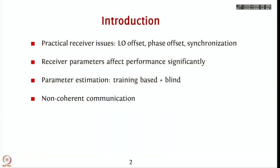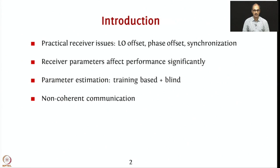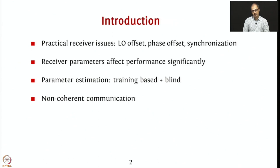There are several practical receiver issues, such as local oscillator offset — that is, you may not have the carrier available at the receiver with the same frequency; there is always some offset. There could also be a phase offset, and you also need to know how to perform synchronization — that is, where is the beginning of the symbol so that you can start getting those symbols. What is the sampling location and what is the correct time at which you have to grab the samples after the match filtering? The receiver parameters affect performance significantly in addition to noise: if you don't sample at the correct location, or if you don't have the correct carrier frequency and phase, then you stand to incur a large amount of errors.